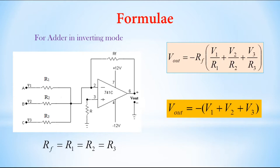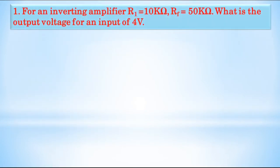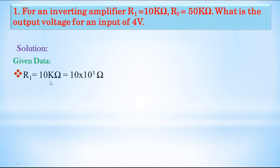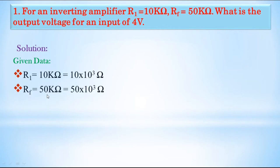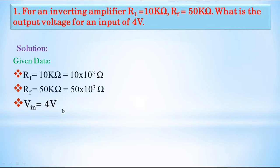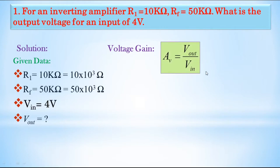Now we will solve problems related to operational amplifiers. Problem 1: for an inverting amplifier, R1 equals 10 kilo ohms and RF equals 50 kilo ohms. What is the output voltage for an input of 4 volts? Given data: R1 equals 10 kilo ohms, that is 10 into 10 power 3 ohms; RF equals 50 kilo ohms, that is 50 into 10 power 3 ohms; input voltage Vin equals 4 volts. We know that for an inverting amplifier, voltage gain AV equals Vout divided by Vin equals minus RF divided by R1.